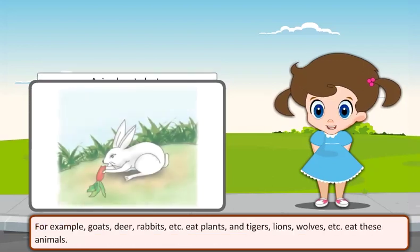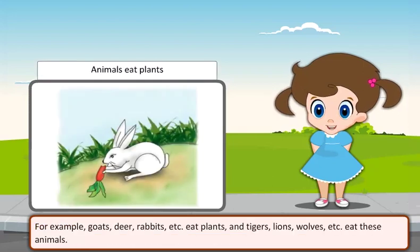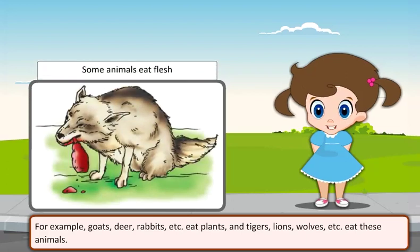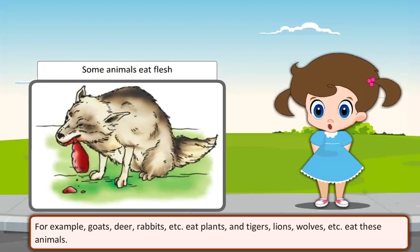For example, goats, deer, rabbits etc. eat plants, and tigers, lions, wolves etc. eat these animals.